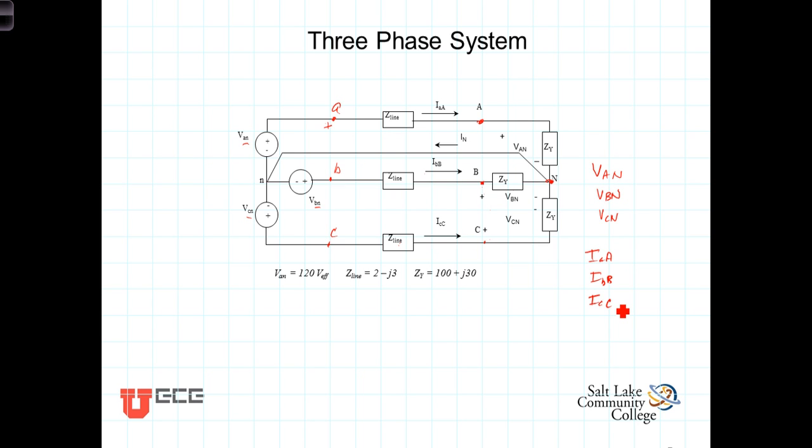That introduces a rather interesting situation. Let's write a Kirchhoff's current law, KCL, at the neutral point right there, at the point where the three impedances, the three phases, are connected at a common point. We have I sub little a big A coming in, we have I sub little b big B coming in, we have I sub little c big C coming in.